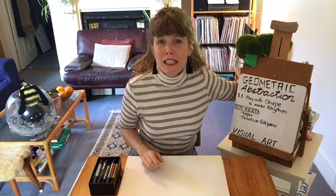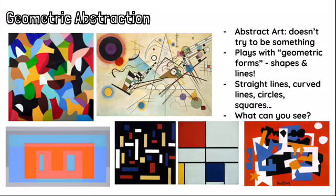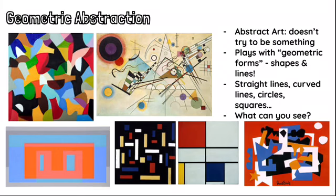Geometric abstraction is abstract art. Abstract art is art that's not trying to be something — it's not trying to show a cat, a hill, or a sunset. It's just using shapes, colors, forms, and marks to make really cool effects. Sometimes you might have something in mind, like thinking about an ocean and using blues and greens with similar shapes, but it's not trying to look exactly like the ocean. So geometric abstraction is a type of abstract art that's not trying to be something.